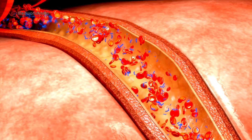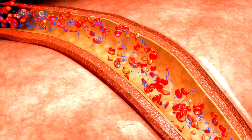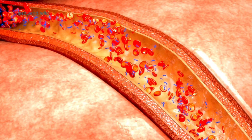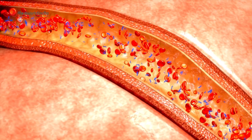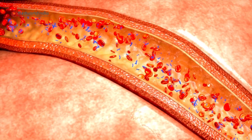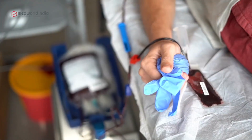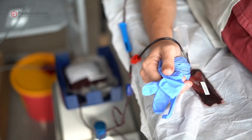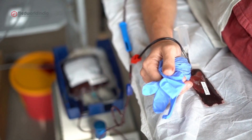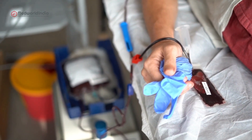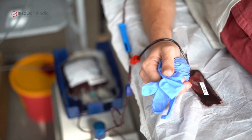2. Heart valve repair or replacement: Damaged heart valves, such as the aortic or mitral valve, may be repaired or replaced using mechanical or biological prosthetics. 3. Aneurysm repair: This involves repairing a weakened area in the heart or aorta — the main artery — that has bulged or ruptured due to high pressure.